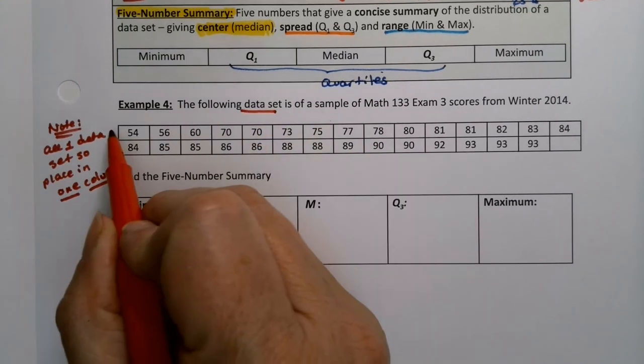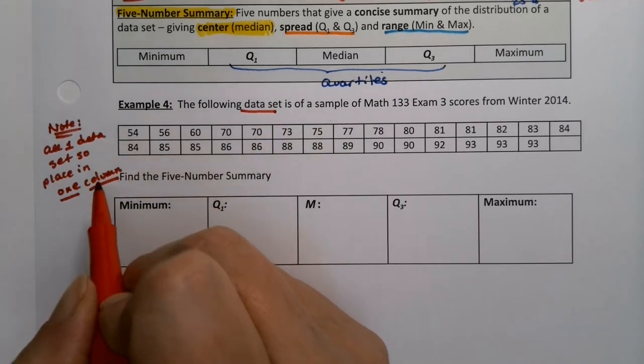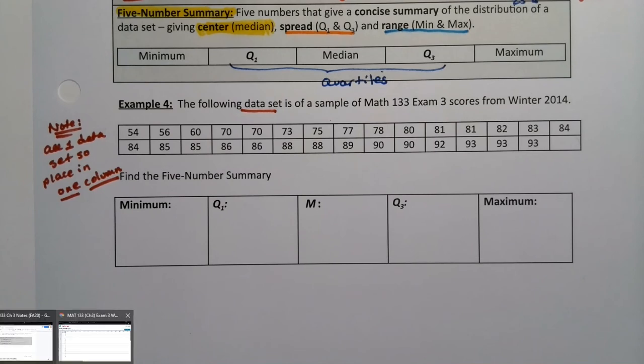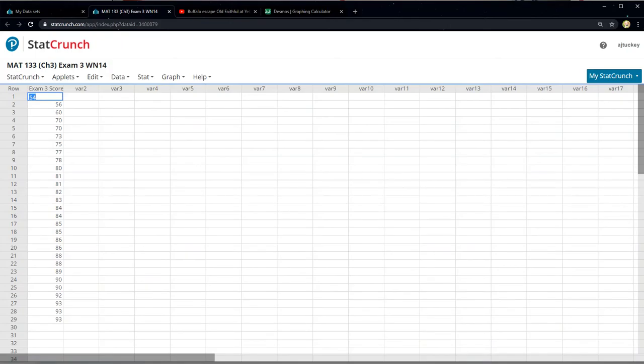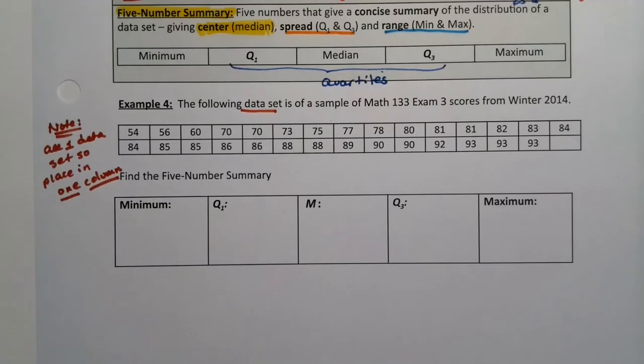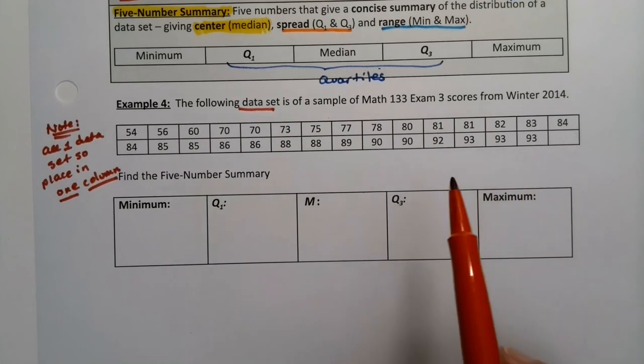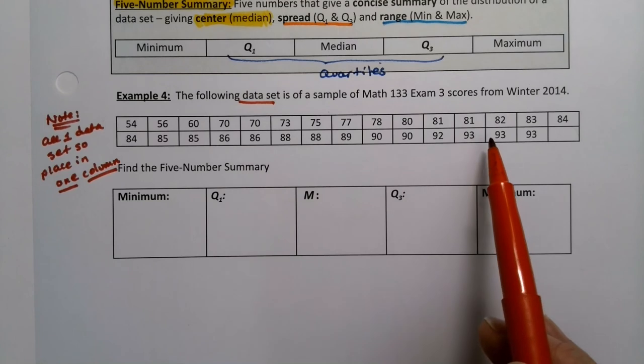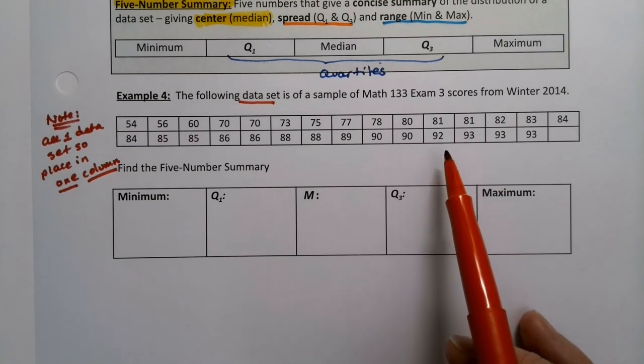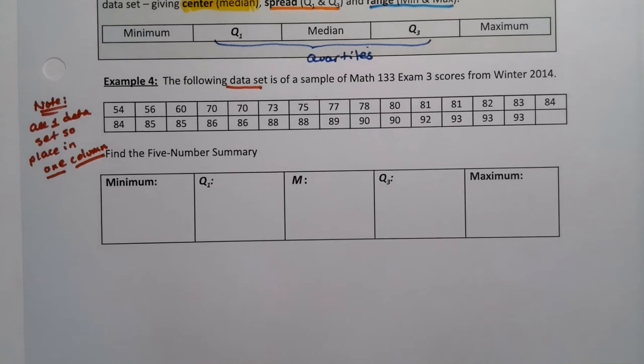So we're going to put this all into L1 in one column, which you can see I already did in the calculator. In StatCrunch, which this will be available to you. If you look up exam three, you know, MAT 133 exam three, it'll pop up because these were the exam three scores from winter 2014. And there they all are in a nice little list, but it's all one column. There's not two columns. I just can't write one column, one row here. I would lose space on the paper. So don't mistake paper saving as two columns of data.